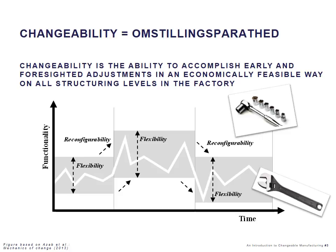This can be done by reconfiguring the system. In other words, when we reconfigure our manufacturing system, we expand or change the boundaries of flexibility. In this sense, flexibility is more short-term and static, whereas reconfigurability is a dynamic capability to change the boundaries of the system.